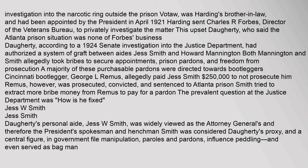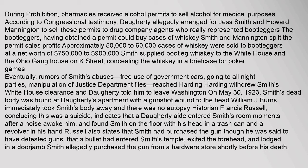During Prohibition, pharmacies received alcohol permits to sell alcohol for medical purposes. According to congressional testimony, Daugherty allegedly arranged for Jess Smith and Howard Mannington to sell these permits to drug company agents who really represented bootleggers. Approximately 50,000 to 60,000 cases of whiskey were sold to bootleggers at a net worth of $750,000 to $900,000. Smith supplied bootleg whiskey to the White House and the Ohio Gang House on K Street. Eventually, rumors of Smith's abuses reached Harding. Harding withdrew Smith's White House clearance and Daugherty told him to leave Washington on May 30, 1923.